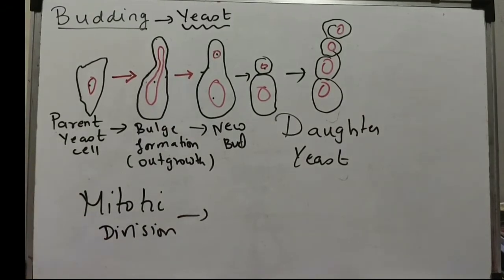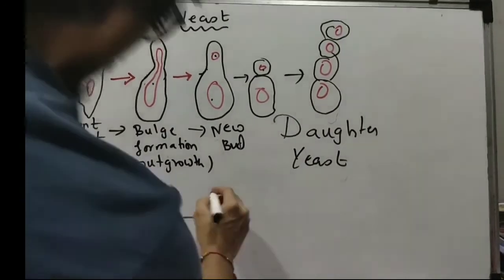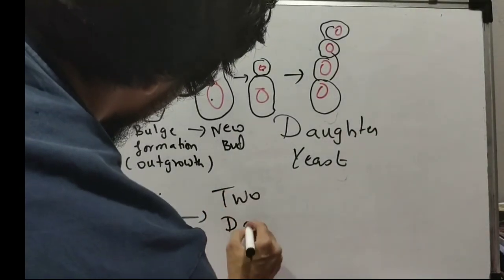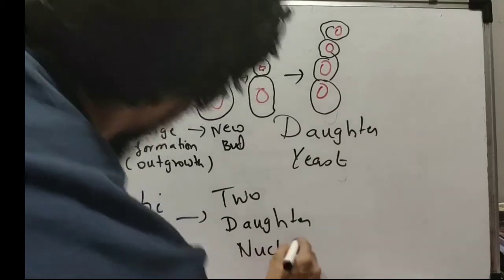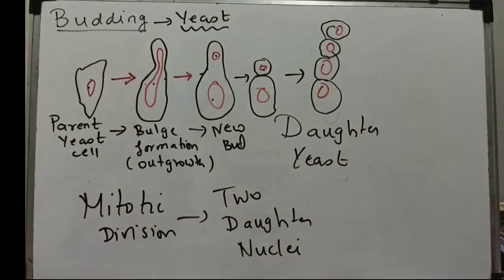Mitotic division, why do we require it? Basically for the formation of two daughter nuclei. One nuclear goes into that outgrowth. It will get all the things that it requires and then it will live an individual life. Your answer should be written in a very simple manner.